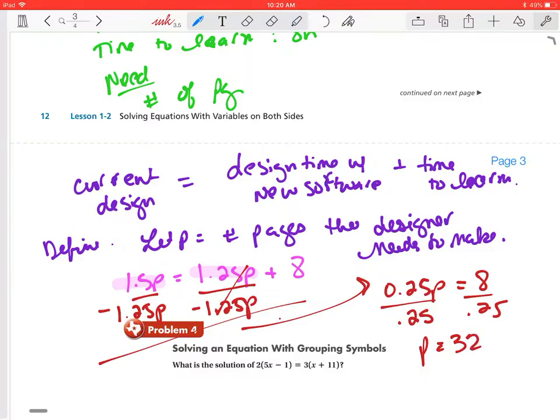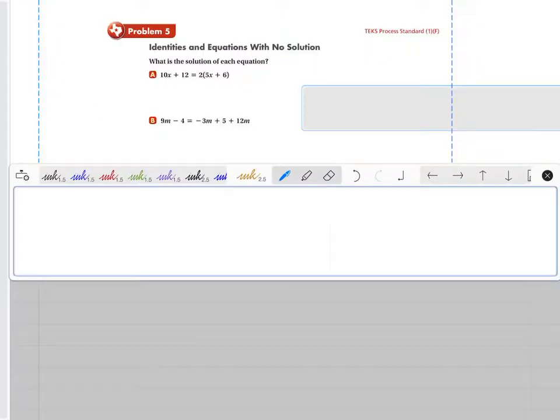So it takes the designer the same amount of time to make 32 web pages using either software. We haven't finalized the answer because the designer must make one more page than that in order to save time. So the designer would need to make 33 pages to save time using the new software. I will see you in the next video.